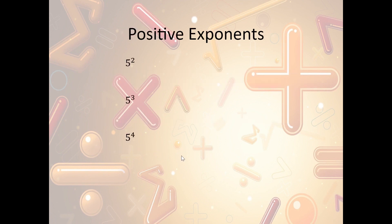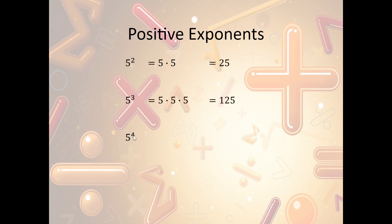Now let's talk about positive exponents. Positive exponents mean that the number of times we're going to multiply it times itself is a positive number. So we have 5 squared, which means that we're multiplying 5 times 5, which is 25. Then we have 5 to the third power, which is 5 times 5 times 5, which is 125. And then 5 to the fourth power is 5 times 5 times 5 times 5, which is 625. We can take any base number and raise it to an exponent and multiply it by itself a certain number of times and solve.